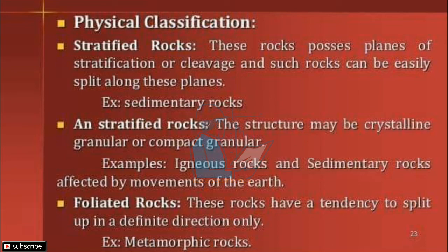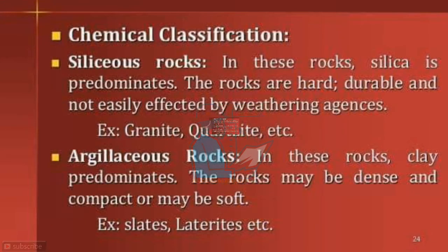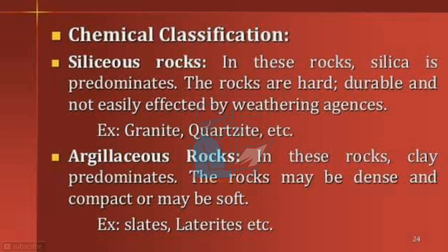Foliated rocks have a tendency to split in a definite direction only — for example, metamorphic rocks. Chemical classification of rocks: In siliceous rocks, silica is predominant. These rocks are hard, durable, and not easily affected by weathering. Examples include granite and quartzite.